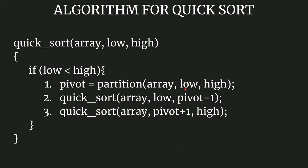Next, we make two recursion calls. The first recursion call handles the left part: arguments are the array, low as the second argument, and pivot minus one as the highest index — the element just before the pivot. The second recursion call handles the right part: the lowest index is pivot plus one — the element next to the pivot — and high remains as is.